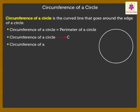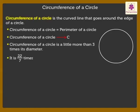Circumference of a circle is a little more than 3 times its diameter. Or, a better approximation would be that it is 22 upon 7 times the diameter of a circle. Thus, it means circumference of a circle is equal to 22 upon 7 into diameter.